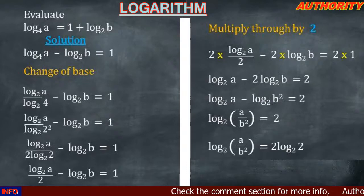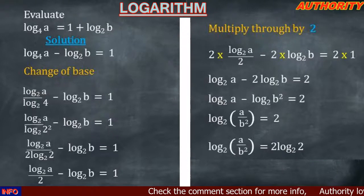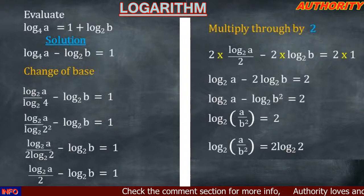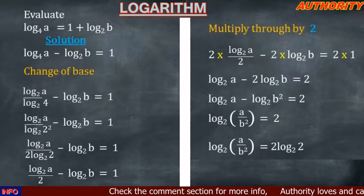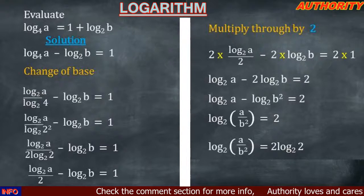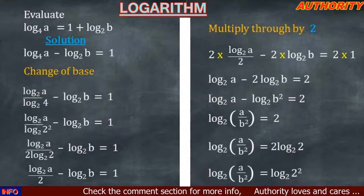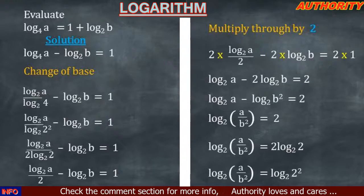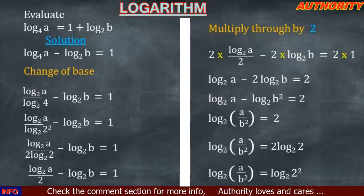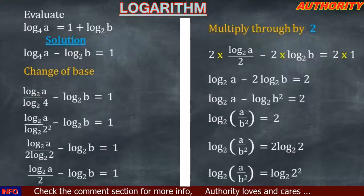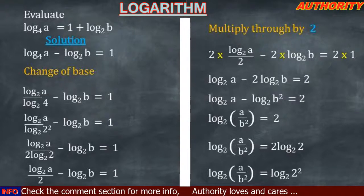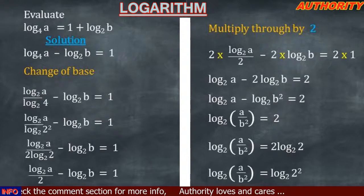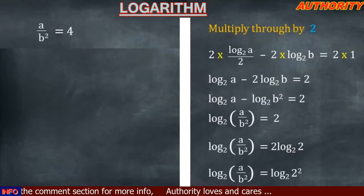We have log base 2 of (a over b²) equal to 2. Now 2 is the same as 2 times log 2 base 2, since log 2 base 2 equals 1. So we can write log base 2 of (a over b²) equal to log base 2 of 2². Since the bases are the same, we remove the logs and get a over b² equal to 2², which is 4.